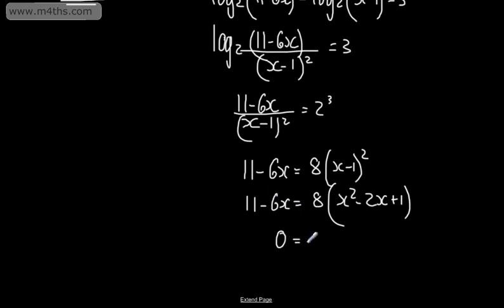I'm going to set the left hand side to 0, we're going to have 8x squared minus 16x, then we're going to plus 6x which is going to give me plus 10x. I'm then going to have plus 8 minus 11 which is going to give us minus 3.